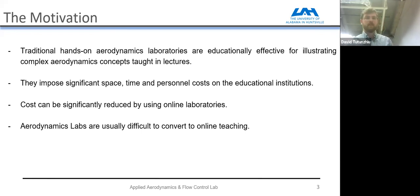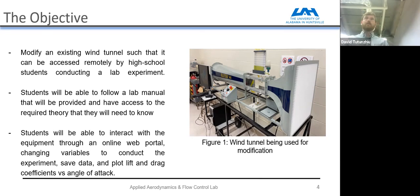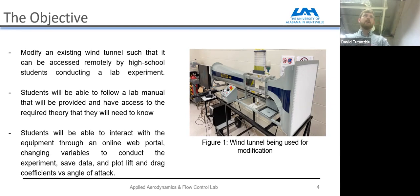We want to make this a research project because aerodynamics labs are usually difficult to cover in an online setting. The primary objective was to modify an existing wind tunnel so it can be accessed remotely by high school students conducting a lab experiment. Students would follow a lab manual online, have access to required theory on the website, and interact with equipment through the online web portal — changing the angle of attack and possibly wind speed. They would save data and plot lift and drag coefficients against angle of attack to see how everything changes relative to wind speed and angle.